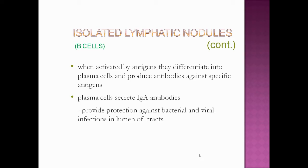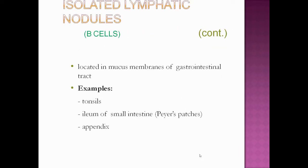When activated by antigens, isolated lymphatic nodules differentiate into plasma cells and produce antibodies against specific antigens. Plasma cells secrete immunoglobulin A antibodies, providing protection against bacterial and viral infections in the lumen of the tract. They are located in the mucous membrane of the gastrointestinal tract — for example, in the tonsils, ileum of the small intestine, Peyer's patches, and the mucous membrane of the appendix.